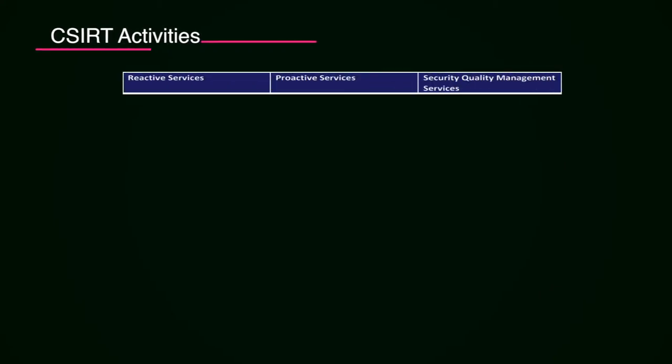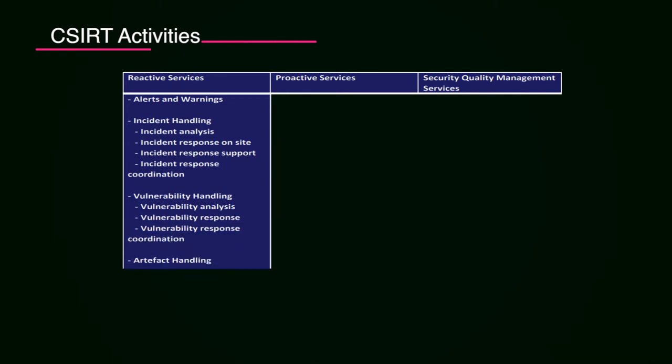The types of activities a CSIRT does — from Carnegie Mellon University — include reactive services, proactive services, and security quality management services. In reactive services, CSIRT issues alerts and warnings, performs incident handling, incident analysis, incident response on-site, incident response support, and incident response coordination with external and internal agencies. They also do vulnerability handling — analyzing reported vulnerabilities and coordinating responses — and artifact handling including artifact analysis, response, and coordination.